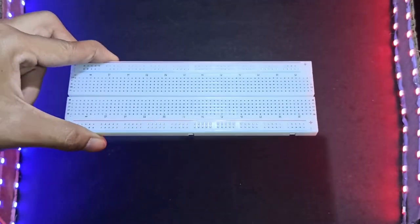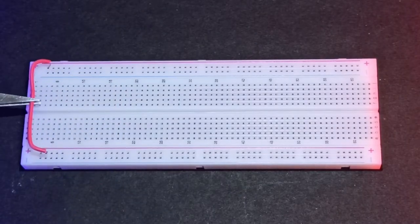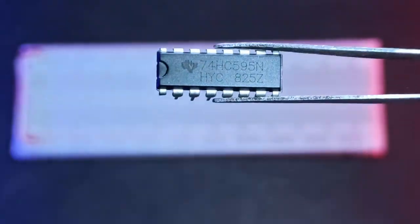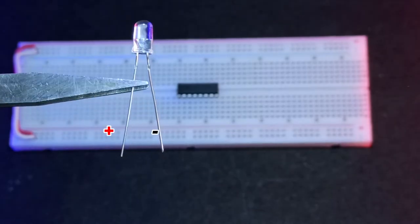Take a breadboard for creating a prototype circuit. Next, change the power connection on both sides of the breadboard. Now attach the shift register on the breadboard. After that, place the LEDs on the breadboard.